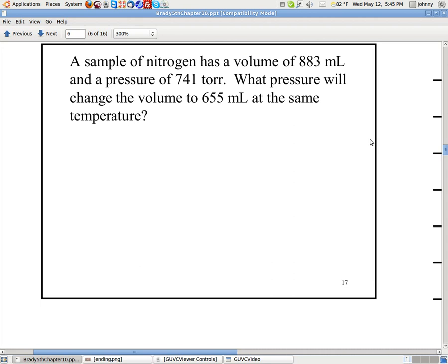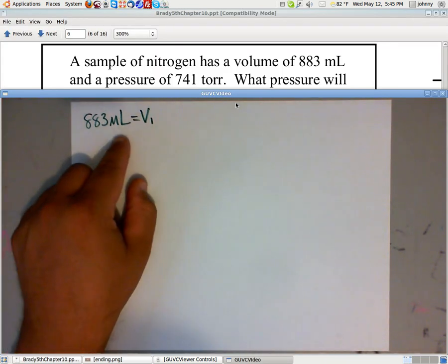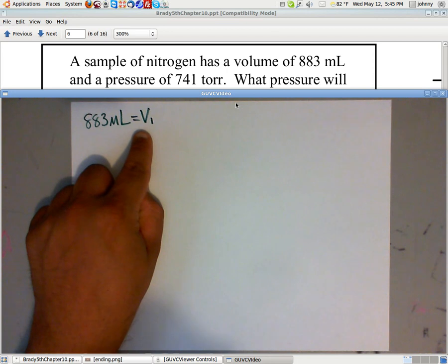Now, notice here that they gave us numbers for volume and they gave us numbers for pressure. In the beginning they mentioned volume, they mentioned pressure, then they asked the question what pressure, and then they gave us the second volume. So what you would want to do is list as many things as you possibly can. Write down the 883 milliliters. That is the first volume you hear, so you write down 883 milliliters for the first volume that we heard.